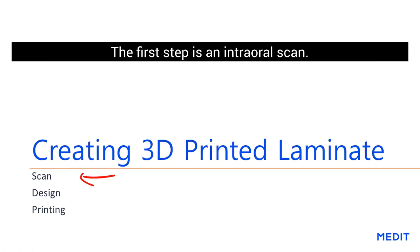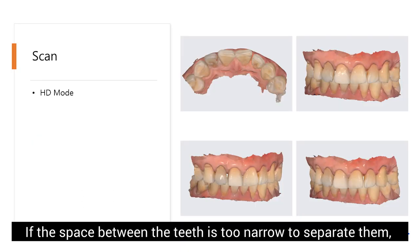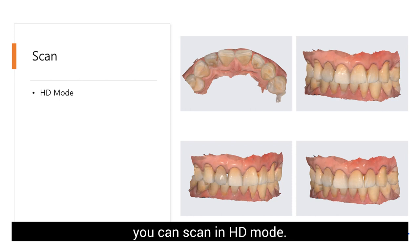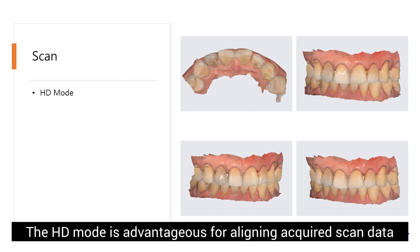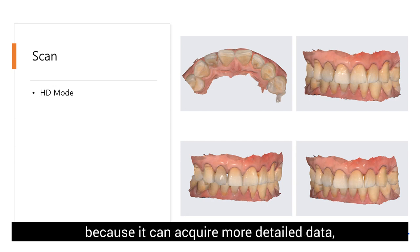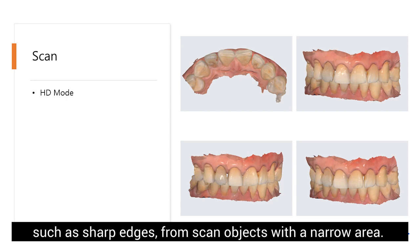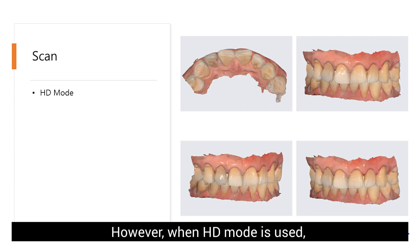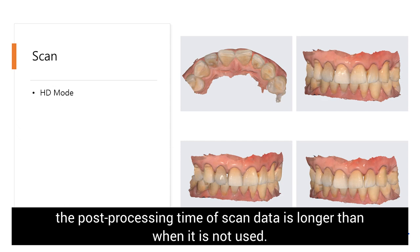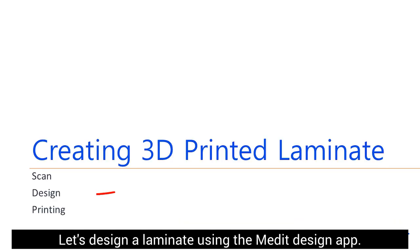The first step is intraoral scanning. If the space between the teeth is too narrow to separate them, you can scan in HD mode. HD mode is advantageous for acquiring more detailed data, such as sharp edges from scan objects with narrow areas. However, when HD mode is used, the photo processing time of scan data is longer than when it is not used. Let's design a laminate using the Medit Design app.